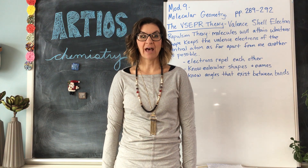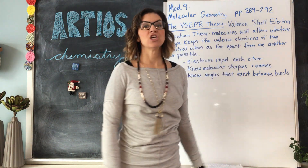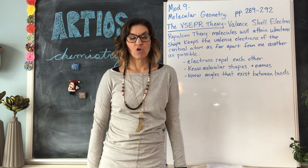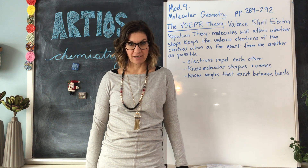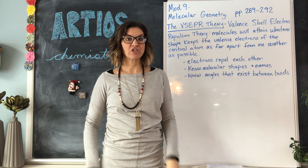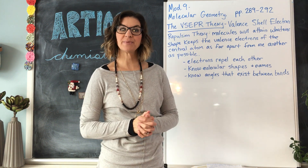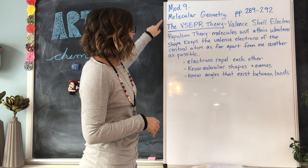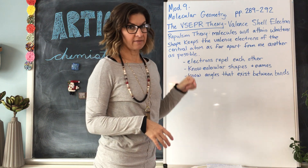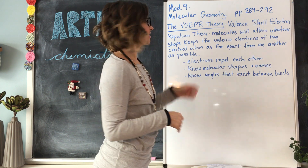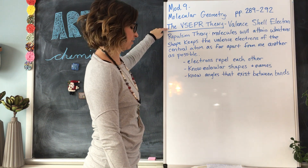We are in module 9, up to pages 289 to 292. Module 9 is about molecular geometry, so we are looking at the shapes of molecules. The way that scientists have determined the shapes of molecules is through the VSEPR theory.